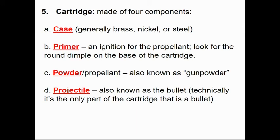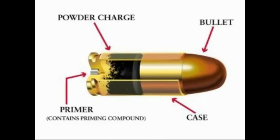The primer is a shock-sensitive compound that ignites the powder internally. The gunpowder then undergoes combustion, creating pressure that sends the bullet down the barrel and out the end, called the muzzle. That would be the projectile. So we have the exposed end of the bullet, its casing, the powder, and then the primer — and of course this could be center fire or rim fire.